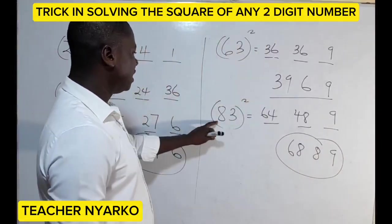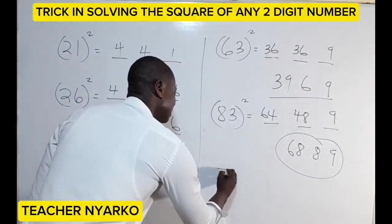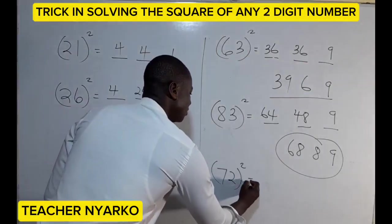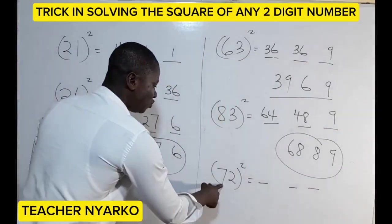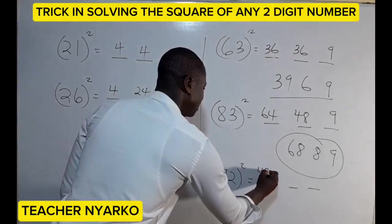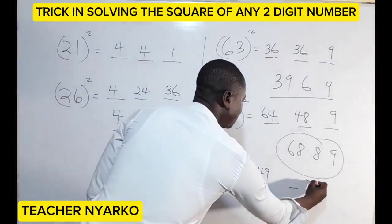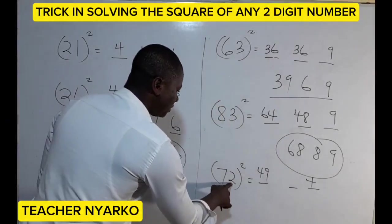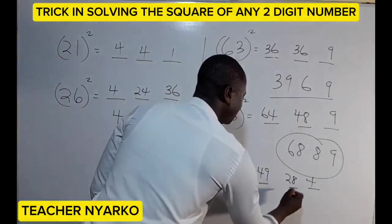Last example: 72 squared. Split into three parts. Seven squared gives us 49. Two squared gives us four. Then seven times two is 14, and 14 times two gives us 28 — so we have 28 here.